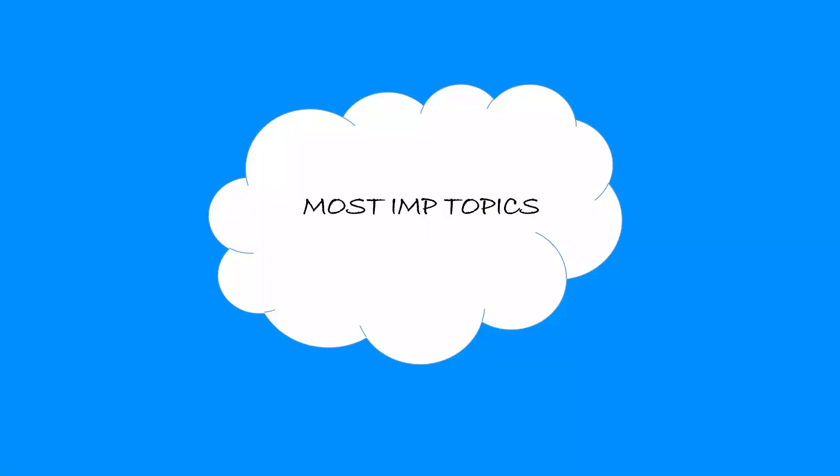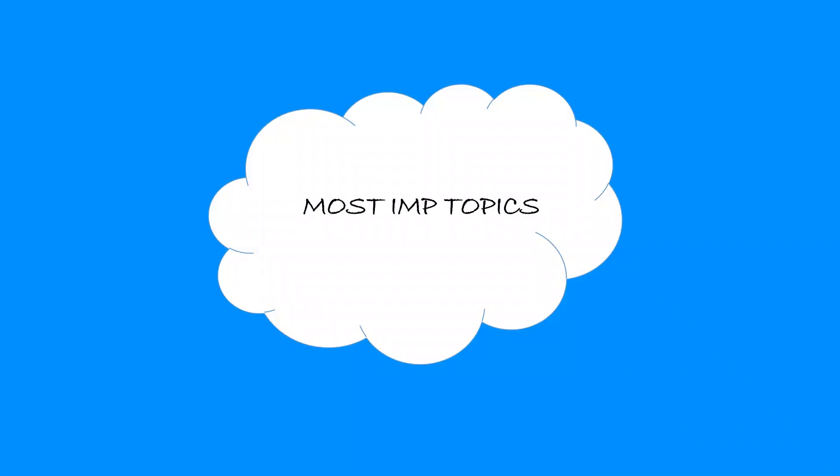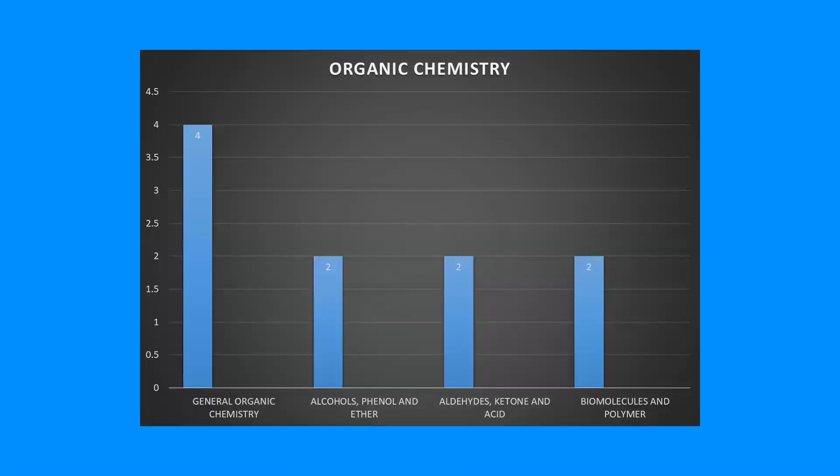Most important topics. Now we have understood what are the easy topics. Now we'll be learning about what are the most important topics, which topics are having more weightage. In organic chemistry, GOC, the general organic chemistry, has four questions coming from this chapter. Then alcohol, phenols and ethers - from that chapter, there are two questions. Aldehyde ketone acids, two questions. Biomolecules, two questions.